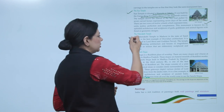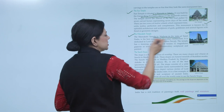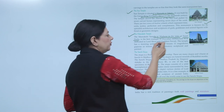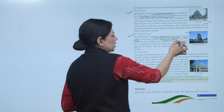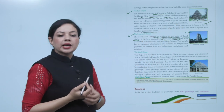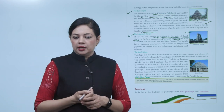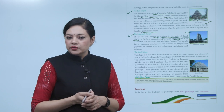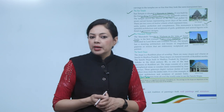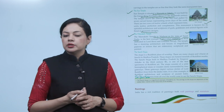Next is Meenakshi Temple, located in Madurai in the state of Tamil Nadu. This is the best example of Dravidian architecture — mainly south ka jo architecture style hai. Isme geometric design use kiya gaya hai. It is dedicated to Lord Shiva and goddess Parvati. The temple has a shining architecture and houses tall magnificent gopuras or towers that are elaborately sculptured and painted.